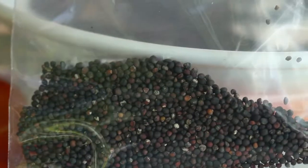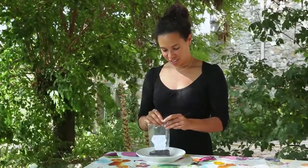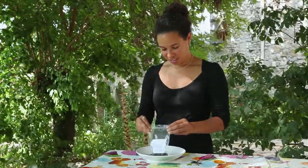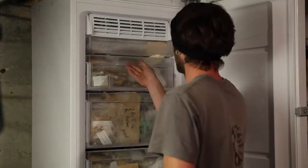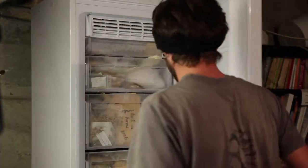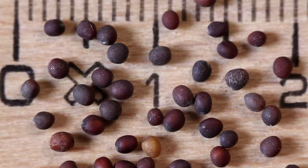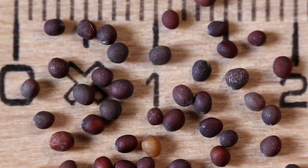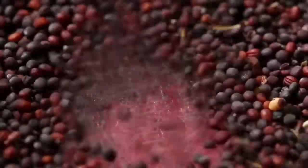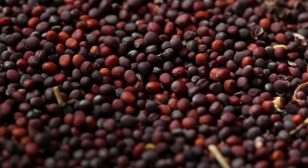It is important to put a label in the packet with the name of the species, the variety and the year of cultivation, as writing on the outside may rub off. Storing the seeds in the freezer for several days eliminates any parasites. Turnip seeds can be kept for at least six years, and this can be prolonged by storing the seeds in the freezer.